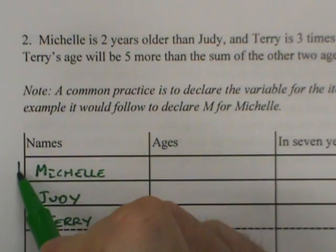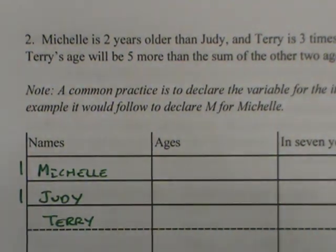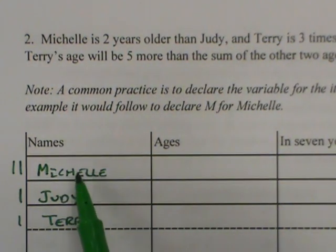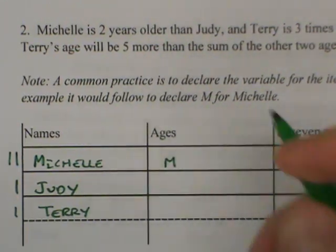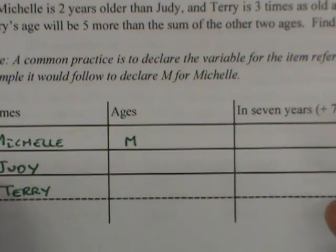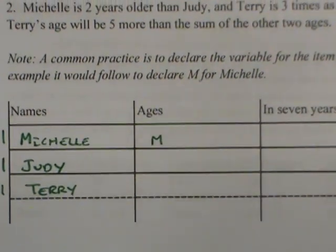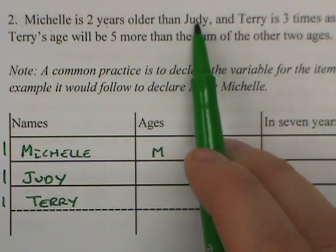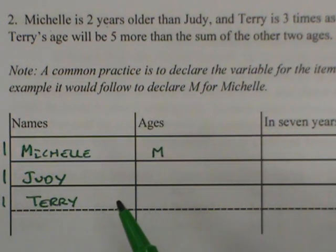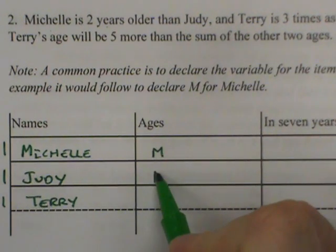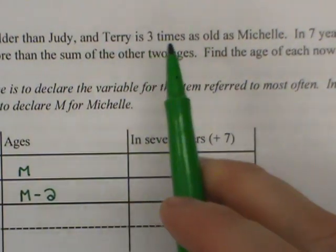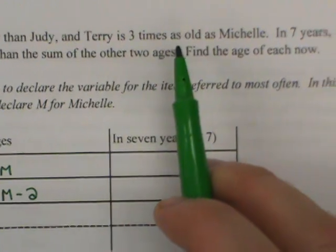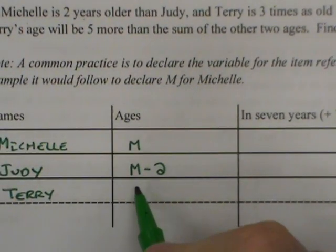Michelle is two years older than Judy, and Terry is three times as old as Michelle. Since Michelle was referred to twice, I'm going to start this problem by declaring M for Michelle's age today. Logically, I can induce that Judy is two years younger than Michelle, so we can call her M minus two. And since Terry is three times as old as Michelle, we can call Terry three M.